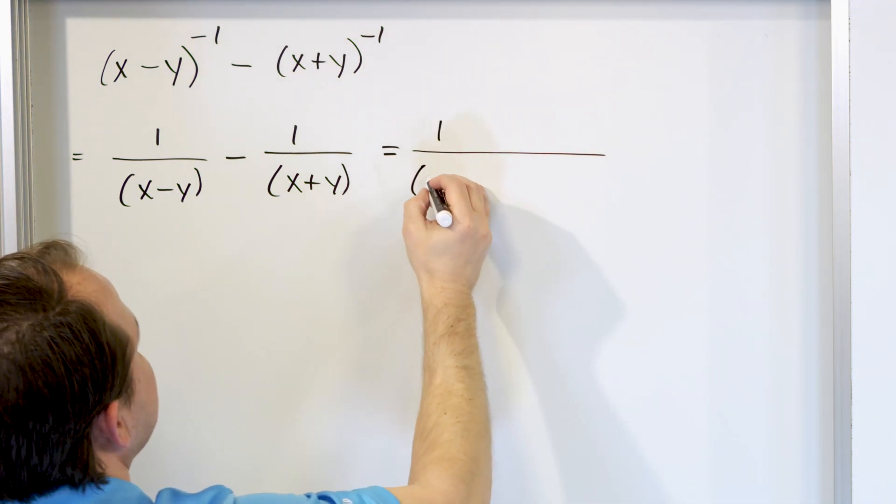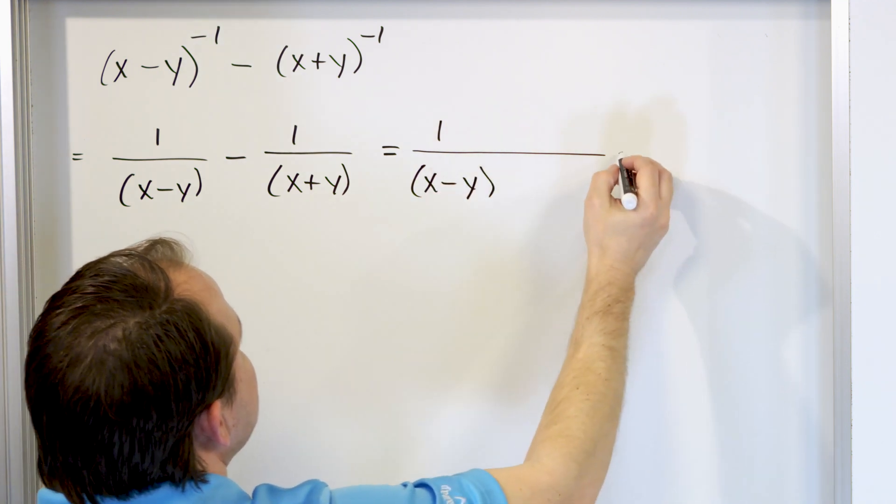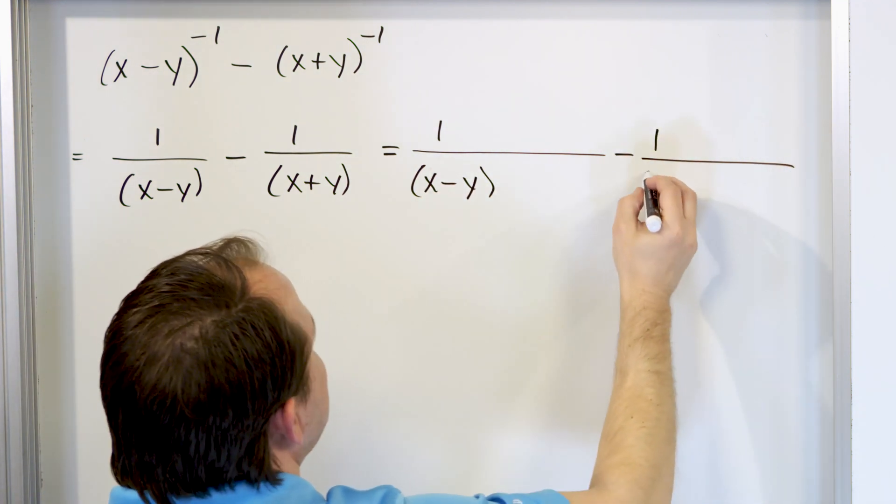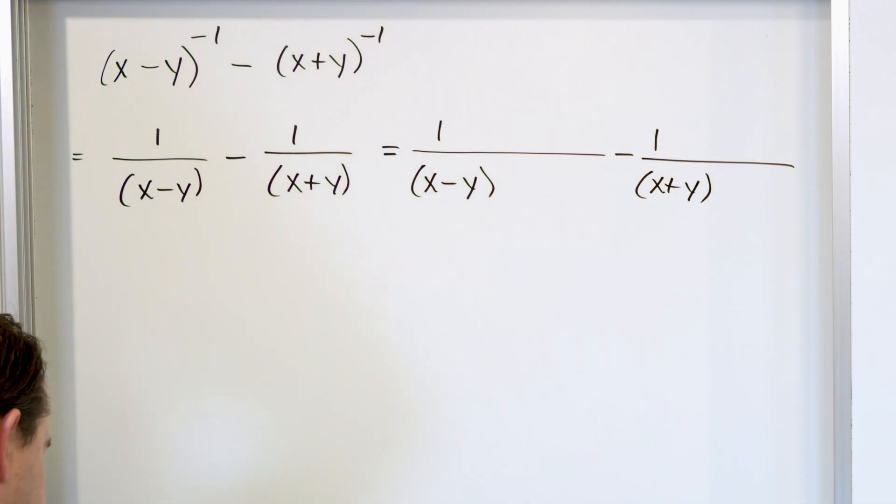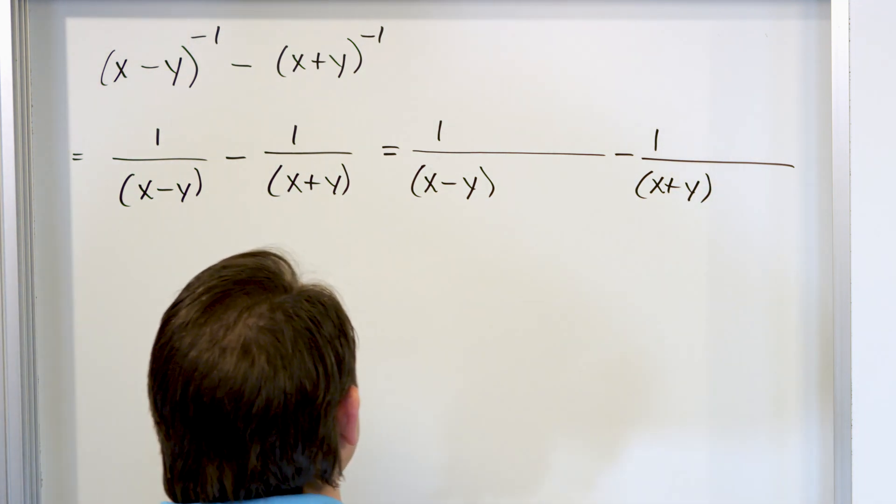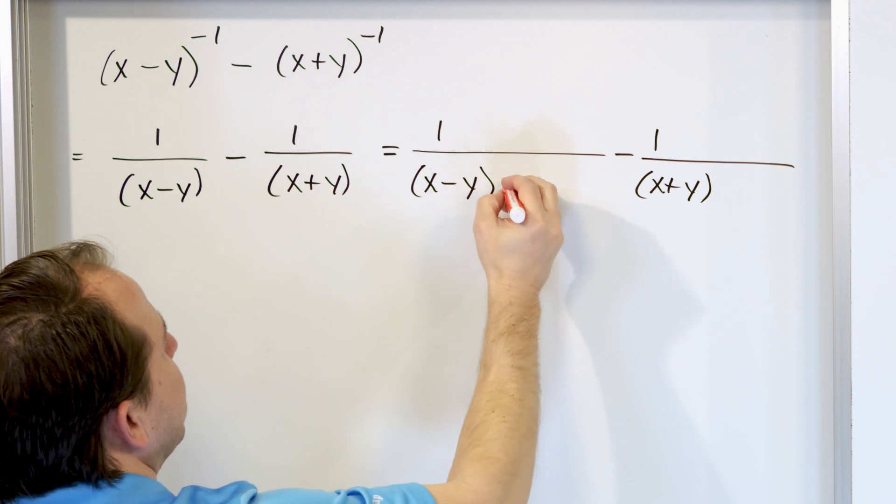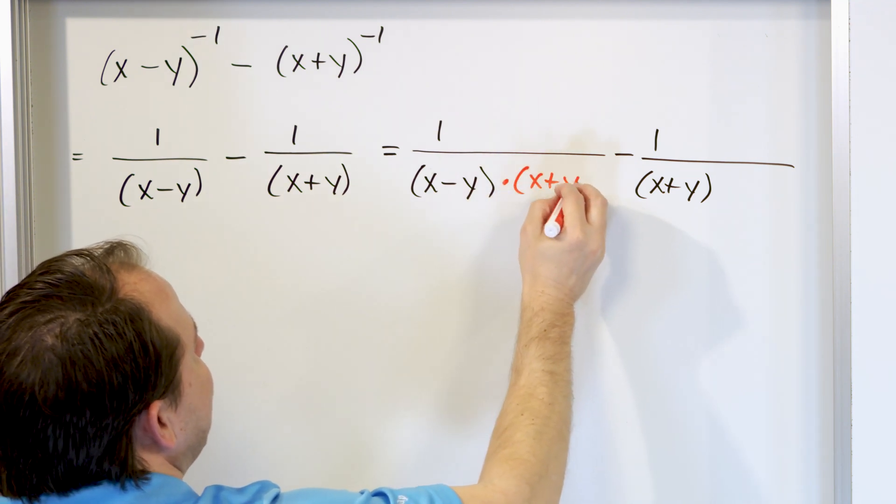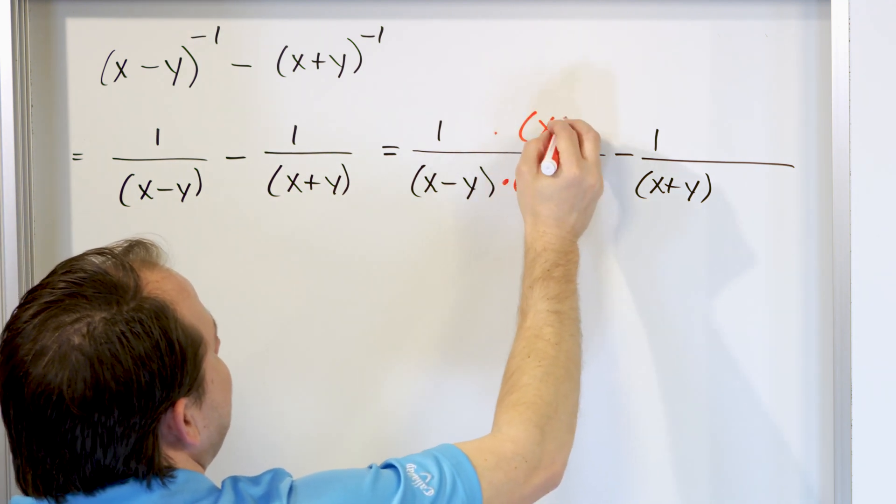The first fraction I'll write out is (x minus y) here. And then I'll subtract from that the second fraction which will be (x plus y). So what I'm going to do is take this first denominator here and multiply by the other one which will be (x plus y). Of course when I do that I have to multiply the top by (x plus y).